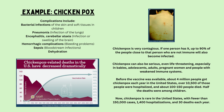As shown in the CDC image, chickenpox is very contagious — if one person has it, nine out of ten people close to that person who are not immune will also become infected. It can be serious, even life-threatening, especially in babies, adolescents, adults, pregnant women, and people with weakened immune systems. Before the vaccine, about 4 million people got chickenpox each year in the United States, over 10,500 were hospitalized, and about 100 to 150 people died — half of those deaths were among children. Now chickenpox is rare, with fewer than 150,000 cases, 1,400 hospitalizations, and 30 deaths each year.